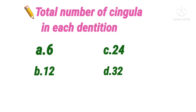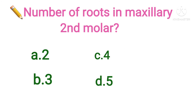Next question: what is the total number of cingulums in each dentition? Option A 6, B 12, C 24, D 32. The answer is option B, 12, because all anterior teeth in both dentitions have one cingulum each — six anterior teeth in the upper arch and six in the lower arch, totaling 12.